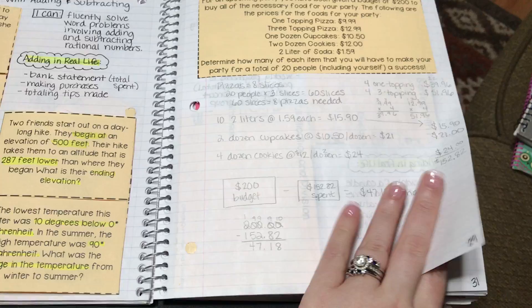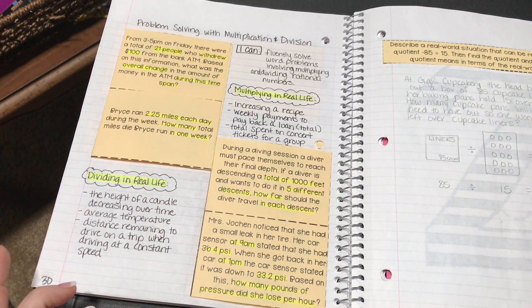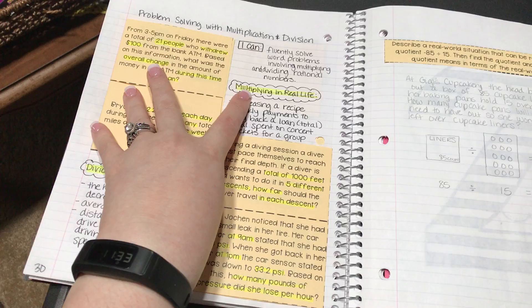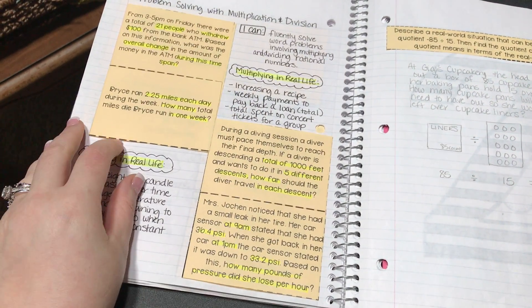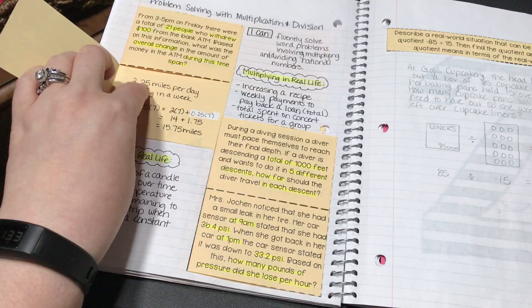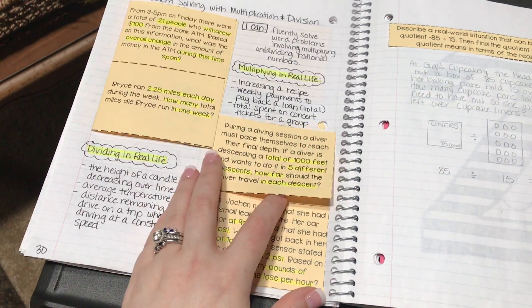Now we have problem solving with multiplication and division, the same format as the one prior. Multiplying in real life, dividing in real life, the problems with solutions underneath. All the technical reading strategies are shown.